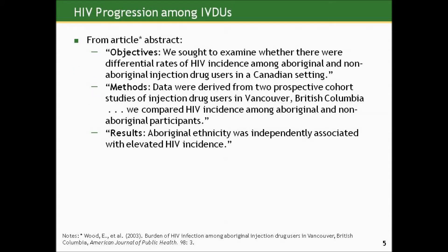To introduce this type of data, let's look at an example from the literature on HIV progression among intravenous drug users, from an article published in the American Journal of Public Health in 2003. The authors sought to examine whether there were differential rates of HIV incidence among Aboriginal and non-Aboriginal injection drug users in a Canadian setting. They derived data from two prospective cohort studies of injection drug users in Vancouver, British Columbia, and compared HIV incidence among the Aboriginal and non-Aboriginal participants. They found that Aboriginal ethnicity was independently associated with elevated HIV incidence.